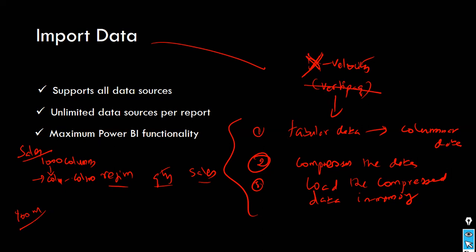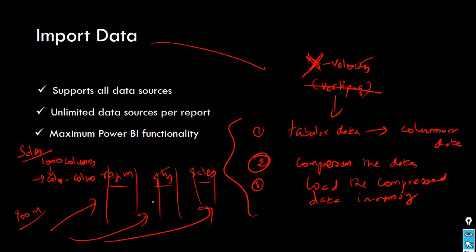That's why columnar databases like HBase were developed. They store each and every column separately so that if you want to query specific columns, the engine goes directly to those columns — no skipping at all. It directly accesses the respective columns and selects them. If you want to filter by quarter, for example quarter 1 and quarter 2, it subsets within those columns. This makes query performance much faster.